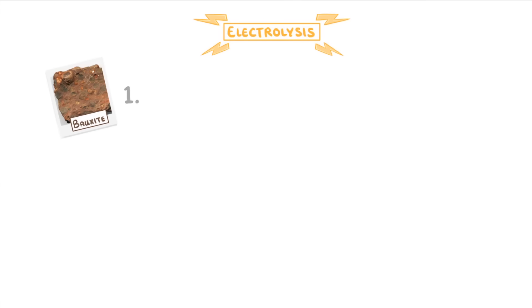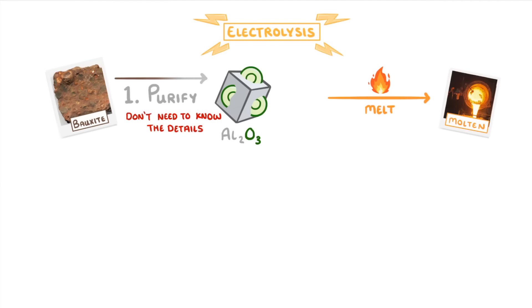The first step is to purify the aluminium oxide from the bauxite that we mined from the ground, which you don't need to know the details of. Next, we need to melt our aluminium oxide to make it molten, which is actually quite hard, because it has a melting point of over 2000 degrees celsius.